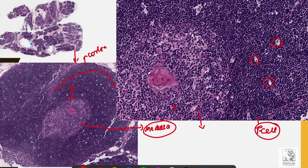In the medulla, the tissue is fairly loosely packed. There are lymphocytes, but we can also see a greater number of epithelial cells. We can also see a large cluster of degenerated epithelial cells together, which is known as a Hassall's corpuscle. Hassall's corpuscles are very classic for thymic tissue and are found specifically in the medulla of the thymus.